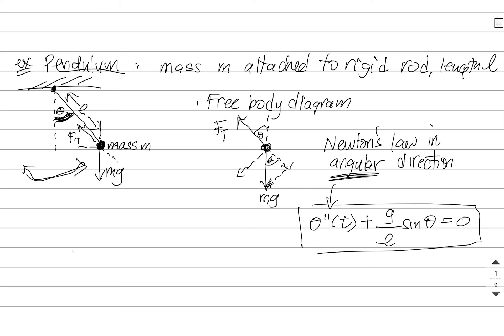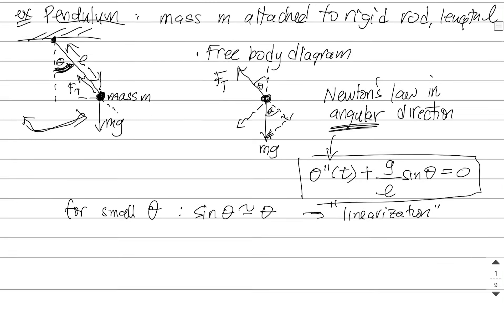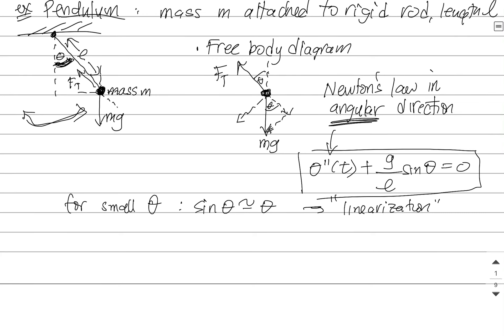Now for small angles, we often use the Maclaurin series expansion for sine, and we replace it like this, and this is what's called a linearization. But if we don't want to linearize it, what we find here is that we keep the sine theta term, it is no longer linear.